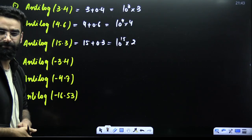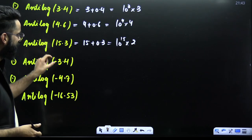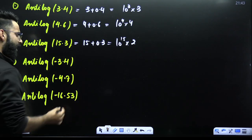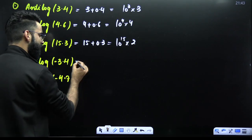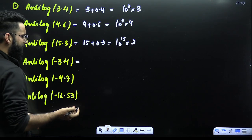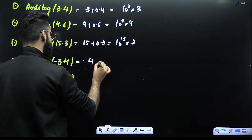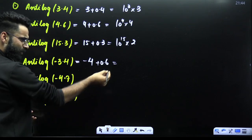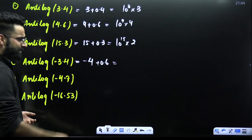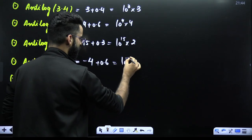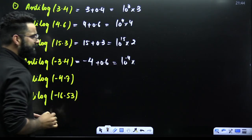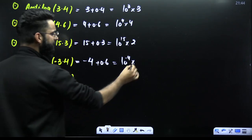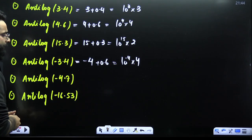Now here is minus 3.4. How can you split minus 3.4? It can be written as minus 4 plus 0.6. Minus 4 gives 10^(−4) directly, and 0.6 is log of 4. So the answer is 4 × 10^(−4).